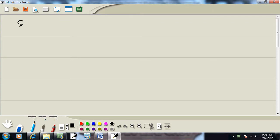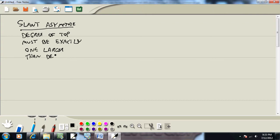So for a slant asymptote, just to refresh your memory, the degree of the top, degree of the numerator, must be exactly one larger than the bottom. So exactly one larger than the degree of the bottom. Now if it is, then how you find a slant asymptote? You use long division and drop the remainder.